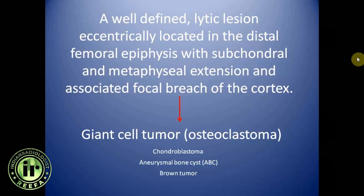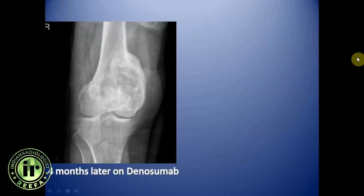Chondroblastoma is excluded because it generally affects skeletally immature patients with non-fused epiphyses and lesions are predominantly epiphyseal. Aneurysmal bone cysts generally have a soap bubble matrix and affect a younger age group. Brown tumor of hyperparathyroidism is excluded because there are no other radiographic signs of hyperparathyroidism in this patient.